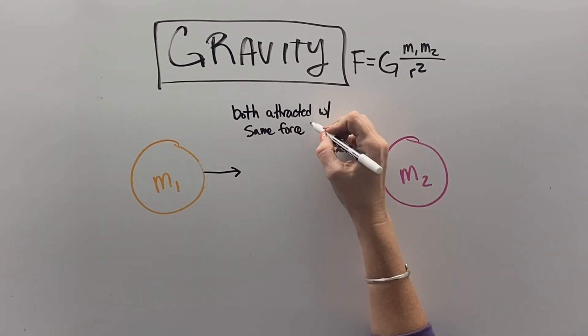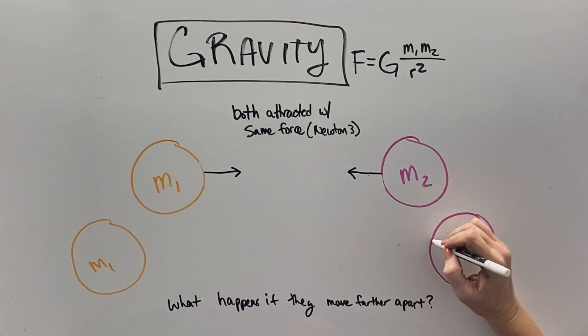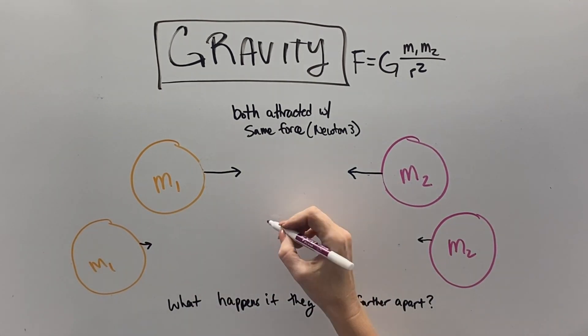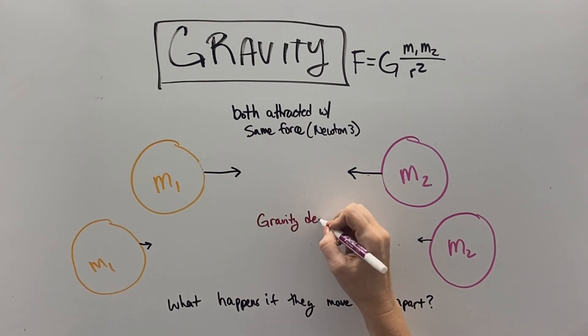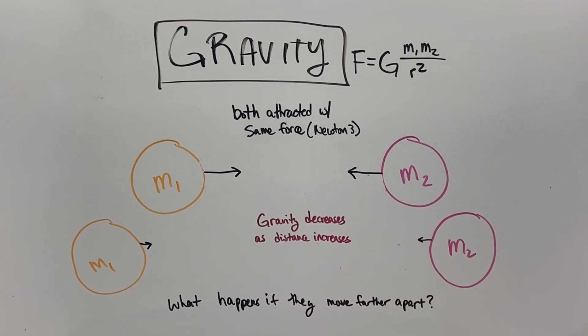So, this leads us to the law of universal gravitation brought to us by Isaac Newton. Both masses are attracted to each other with the same force, so the arrows are in opposite directions. But what happens if they move farther apart? Well, the force arrows get smaller, and this demonstrates that gravity decreases as the distance between objects increases.